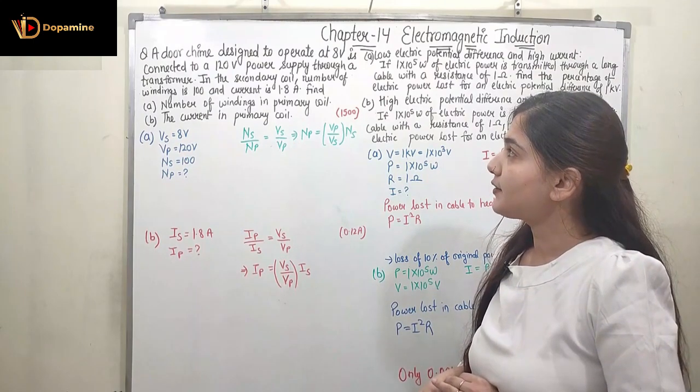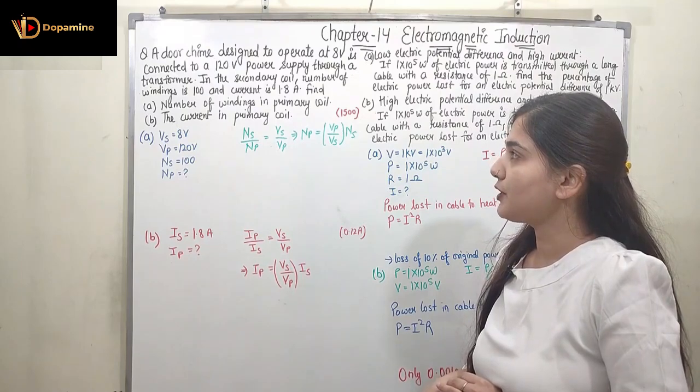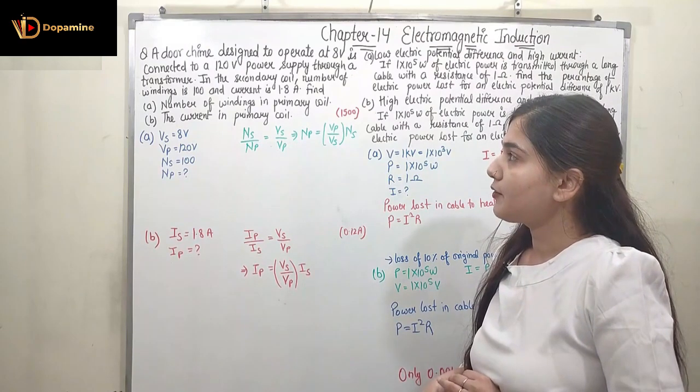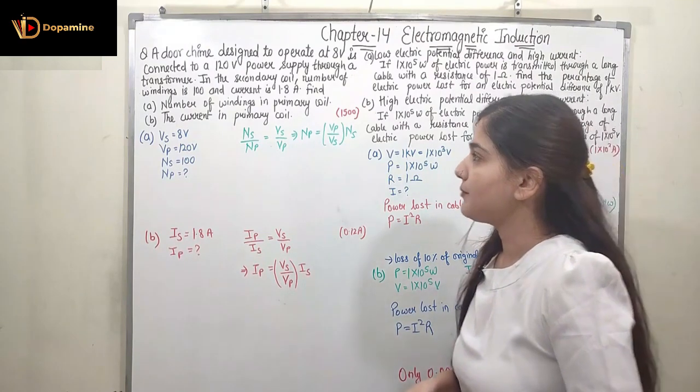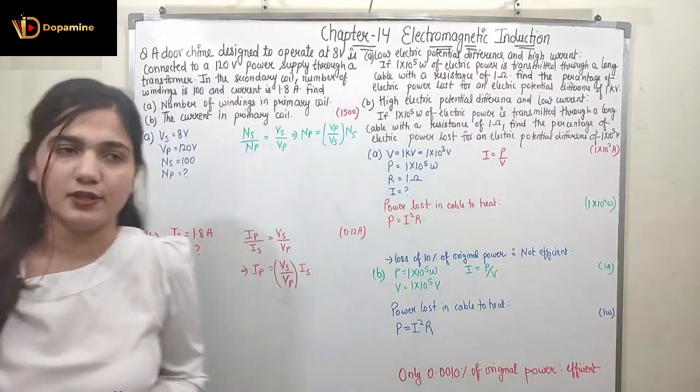In the secondary coil, the number of windings is 100 and the current is 1.8 ampere. Find the number of windings in the primary coil and the current in the primary coil.